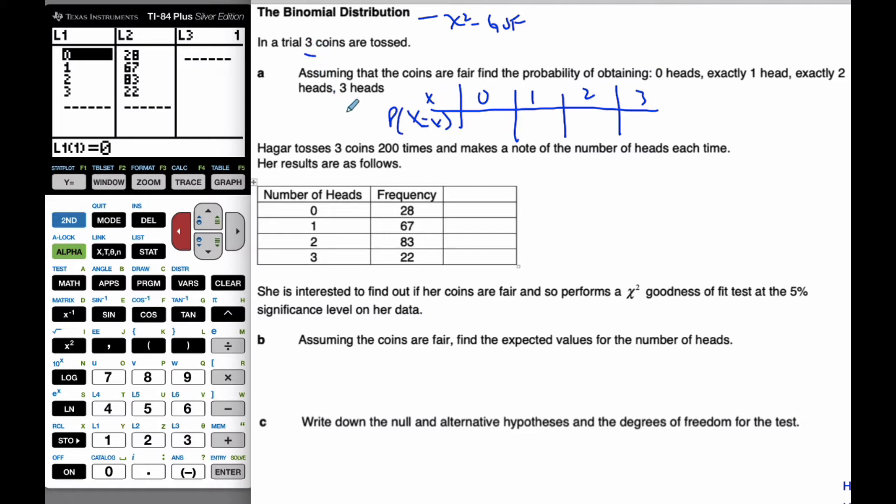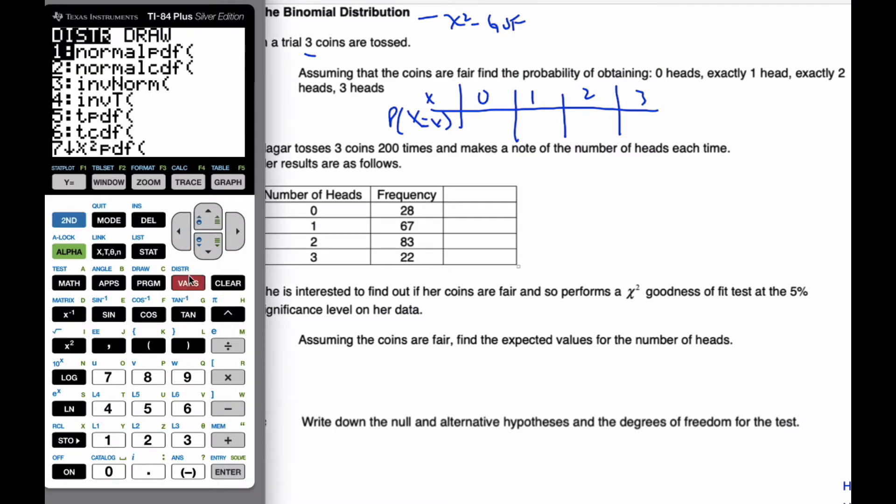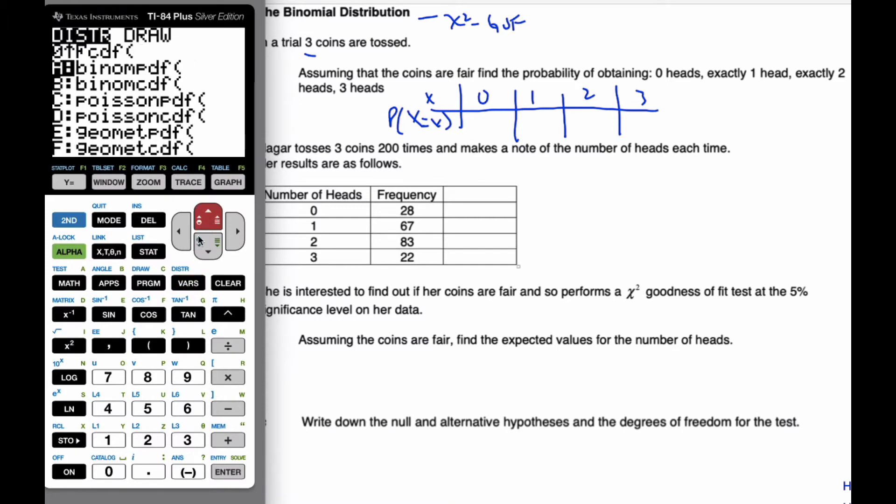And so, if I want to find these probabilities, I can go to my calculator here, and I've already started to put things in here. So, L1 is my possible heads. So, if I'm going to find the probabilities, I'm going to go to L3, I'm going to go second distributions, I'm going to go to binomial PDF.